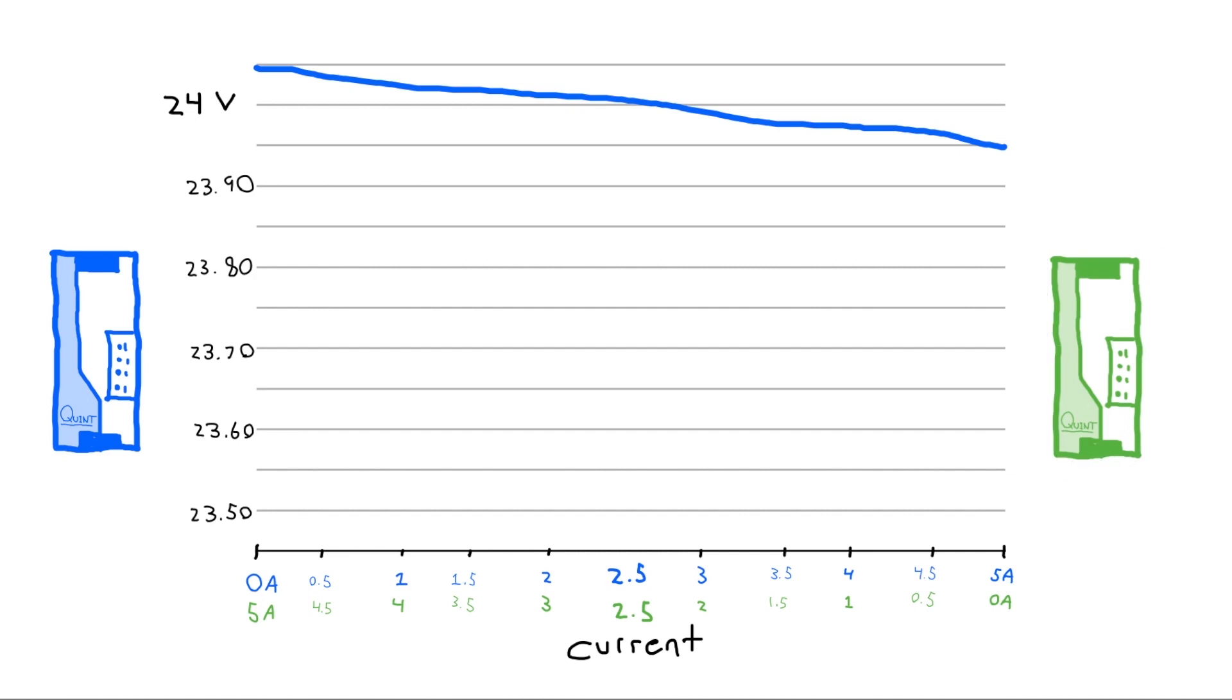When we add another QUINT, we can see how they will cooperate. When the load is at the full 5 amps, the point where their line intersects tells us how much current each power supply will give. If the power supplies have the exact same voltage, they will both give 2.5 amps.